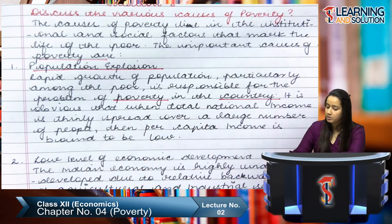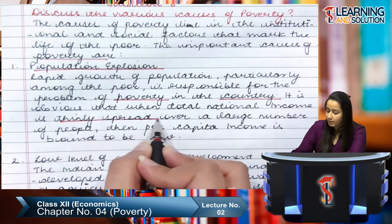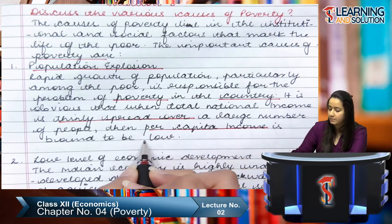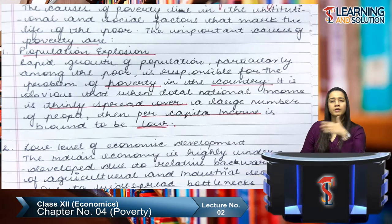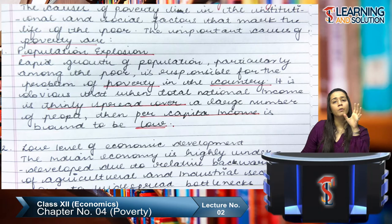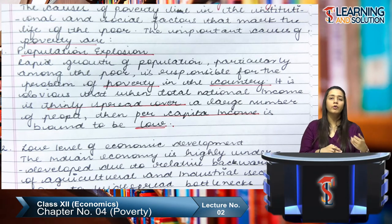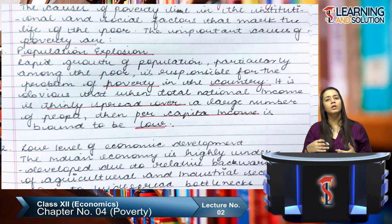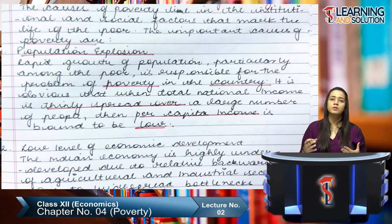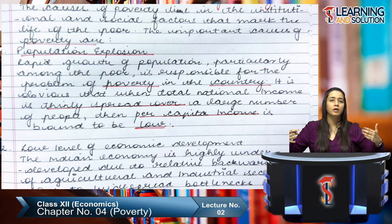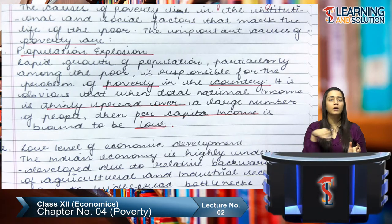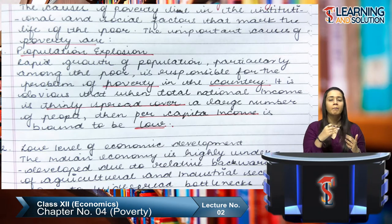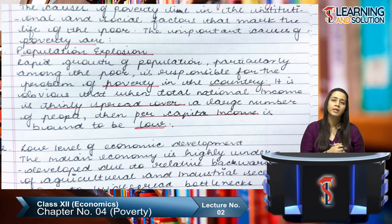It is obvious that when the total national income is thinly spread over a large number of people, per capita income is bound to be low. Our income is not growing much but our population keeps increasing. So the same income that used to be split among fewer people is now split among more people. Per capita income equals total income divided by population — the numerator is not increasing at the rate it should, but the denominator is increasing rapidly, so per capita income keeps falling.